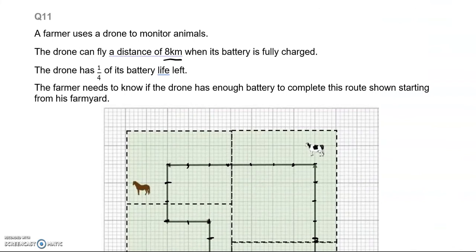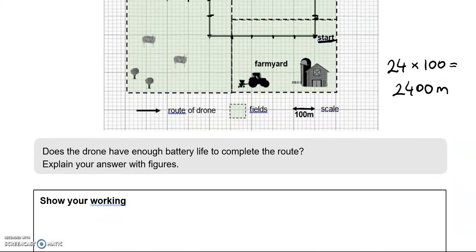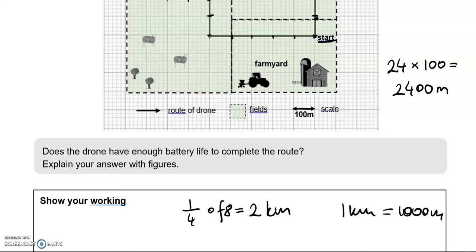So we are given here the distance that the drone can fly when fully charged in kilometers. So it's 8 kilometers and one quarter of the battery is left. So one quarter of 8 is equal to 8 divided by 4 which is 2. So 2 kilometers. Now that 2 kilometers, if you convert it into meters, we know that 1 kilometer is equal to 1000 meters. So 2 kilometers is going to be 2000 meters. Comparing that to this, now the drone can only do 2000 meters but this route is actually 2400 meters long so it's not enough.